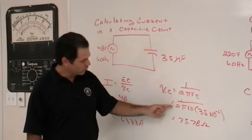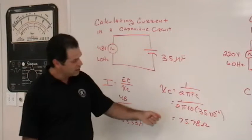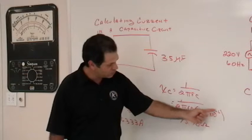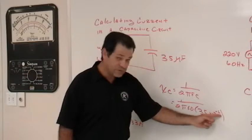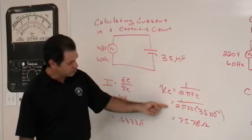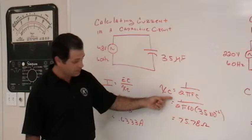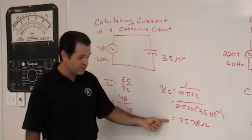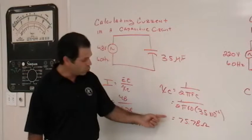Put the values in: 1 over 2 pi times 60 times 35 times 10 to the negative 6. Negative 6 meaning microfarad, punch it in the calculator, hit enter and reciprocate it.